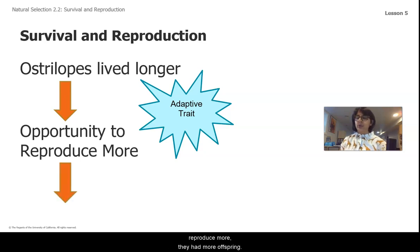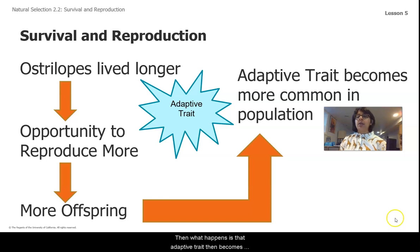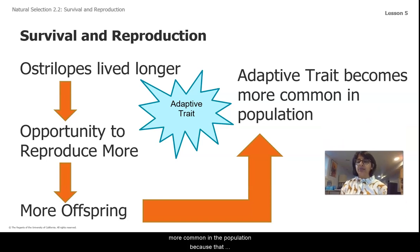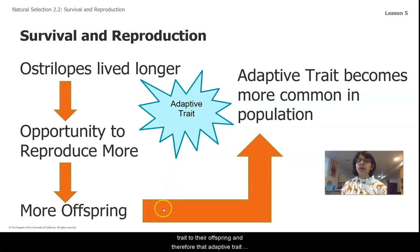And when they were able to reproduce more, they had more offspring. Then what happens is that adaptive trait becomes more common in the population, because that adaptive trait is being passed on from parents to offspring. So when they have more opportunity to reproduce, they're also passing down that adaptive trait to their offspring, and therefore that adaptive trait becomes more common in the population.